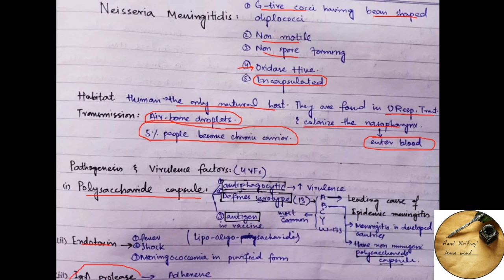Coming back towards the polysaccharide capsule, it is antiphagocytic and it increases the virulence of Neisseria meningitidis. It is antiphagocytic in a sense that the negative charge of capsule repels the negative charge present on the cell membrane of bacteria and thus prevents adherence of the phagocytes to the bacteria.